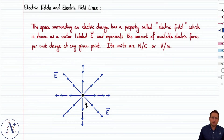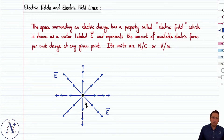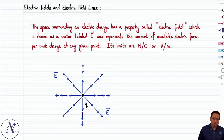Now that we've introduced and defined electric charge, let's introduce the notion of an electric field. An electric field is a property that exists in the space surrounding an electric charge, is represented by a vector, typically denoted by uppercase E, and at any given point represents the available electric force per unit charge.